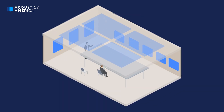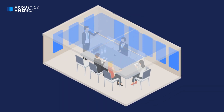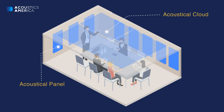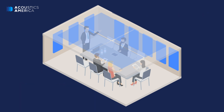To improve sound absorption, install acoustical panels onto the walls and/or suspend acoustical clouds from the ceiling. These products will soak up the sound waves and prevent them from reflecting.